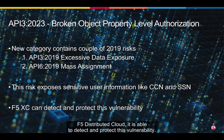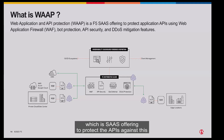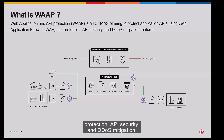If distributed cloud is able to detect and protect this vulnerability, the solution provided is WAP — a SaaS offering designed to protect APIs against application threats using different features like web application firewalls, bot protection, API security, and DDoS mitigation.